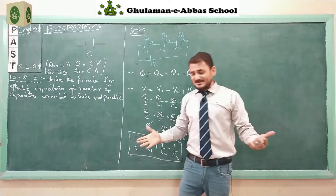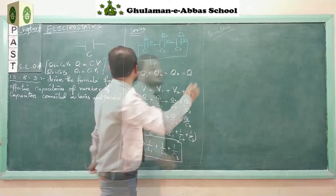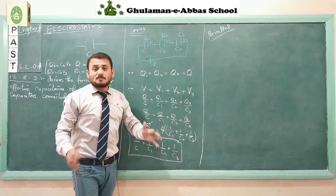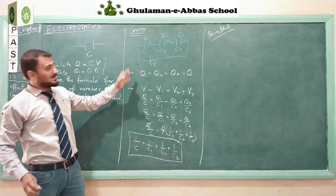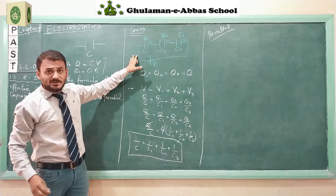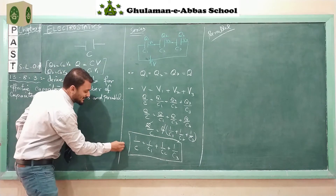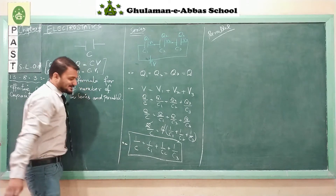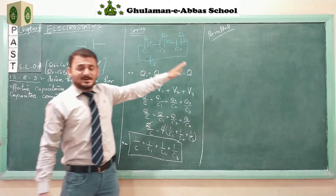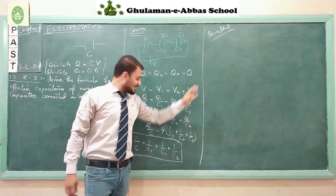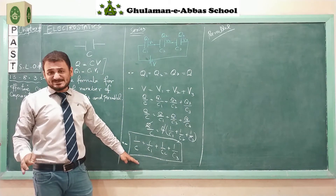Now let's move on to the combination known as parallel combination. If we have total capacitance in a series combination we use that formula, and now we will derive the formula for parallel combination.